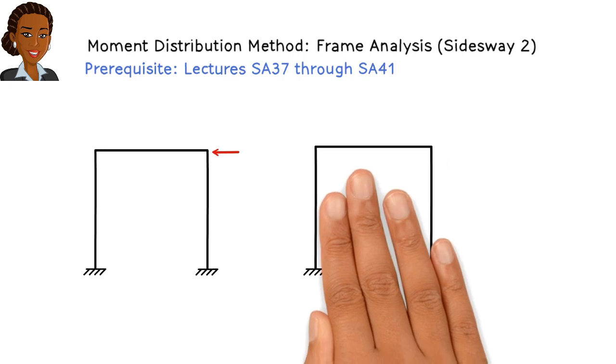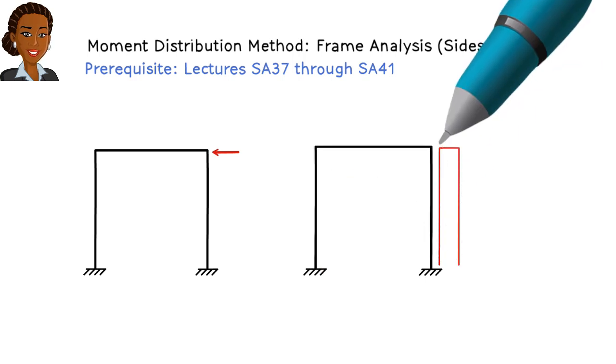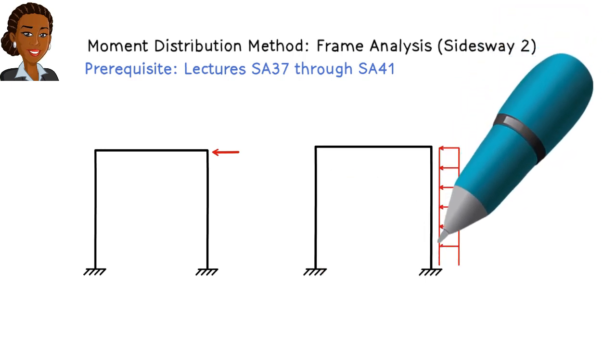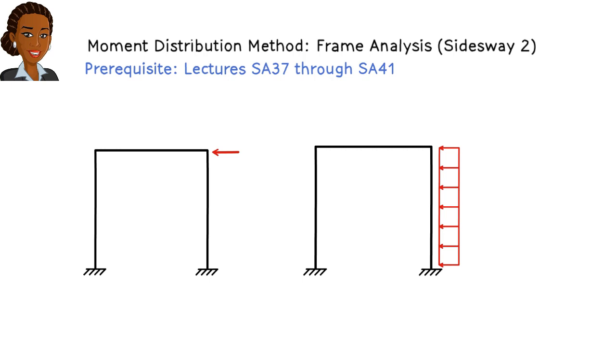What if, instead of a joint load, the frame is subjected to a member load like this? How do we analyze the frame then?